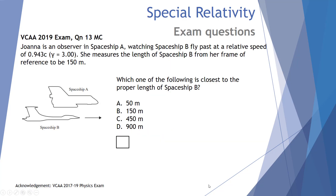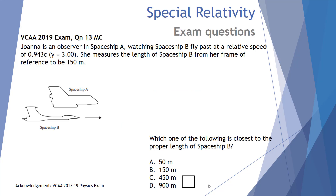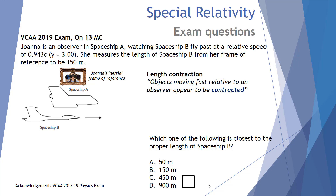Our first question comes from the 2019 VCAA exam. Joanna is an observer in Spaceship A watching Spaceship B fly past at a relative speed of 0.943 the speed of light — that is a Lorentz factor of three. She measures the length of Spaceship B from her frame of reference to be 150 meters. Which of the following is closest to the proper length of Spaceship B? As Joanna is in the frame of reference of Spaceship A, she notices there will be a length contraction of the object moving fast past her relative to her observational frame of reference.